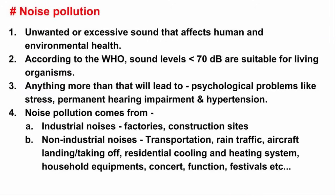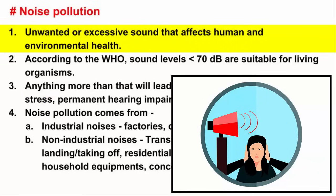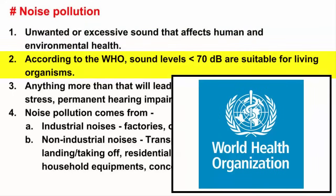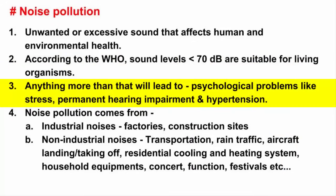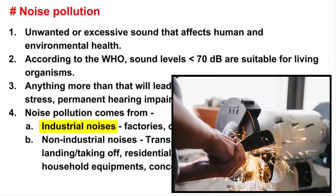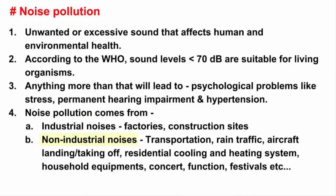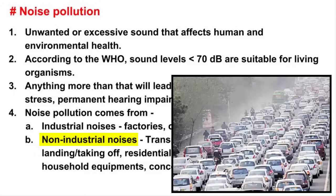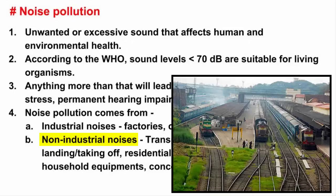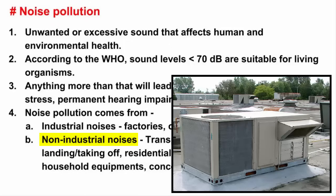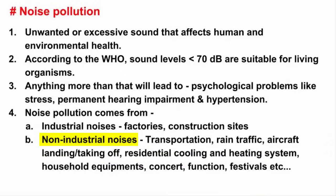The fourth one is noise pollution. Unwanted or excessive sound that can have serious effects on human and environmental health leads to noise pollution. According to the World Health Organization, sound levels less than 70 decibels are not damaging to living organisms. Anything more than that may lead to psychological problems like stress, permanent hearing impairment, and hypertension. Noise pollution comes from factories — operation of machines and motors — and construction sites like operation of cranes and welding; these fall under industrial noise. Non-industrial noises include transportation such as road traffic honking and vehicle engine noise, rail traffic noise from train wheels and engines, and aircraft taking off and landing. In residential areas, noise pollution is caused by cooling and heating systems, household equipment, community concerts, and festivals.